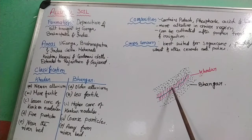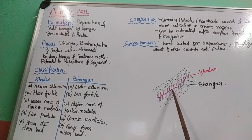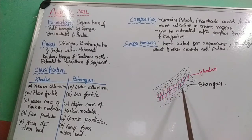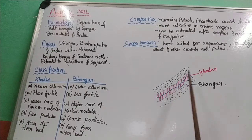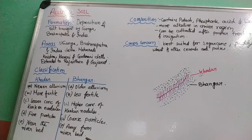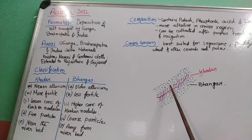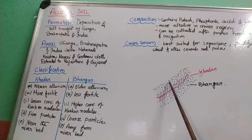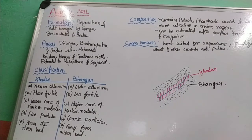Bhangar forms when a very heavy flood occasionally spreads water much farther from the main riverbed. When the water recedes, silt is left far from the river. This does not happen every year — normally the river floods only close to its banks, depositing fresh Khadar soil. But if, say, 10–15 years ago there was a heavy flood that spread far, that soil has now aged and become less fertile — that is Bhangar soil.